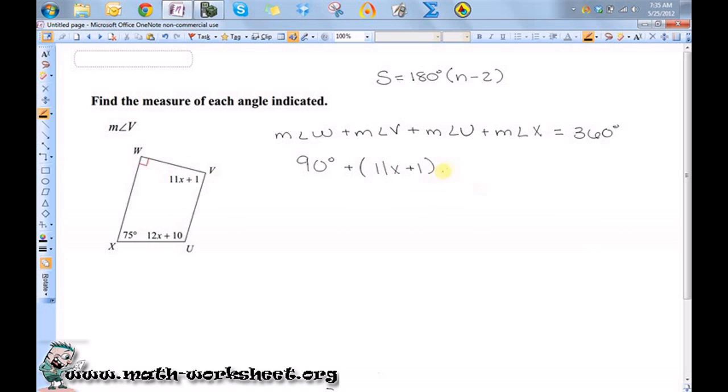And 12X plus 10 is the measure of angle U. And the measure of angle X is 75 equals 360 degrees.